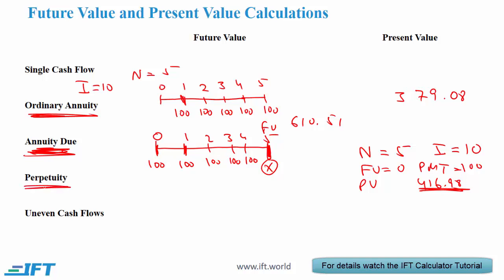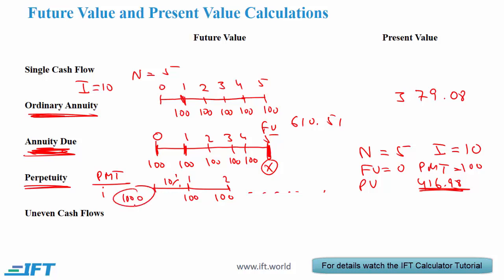With a perpetuity we get a cash flow every year forever. So if we have a situation where we get $100 at the end of year 1 and then $100 at the end of every year forever, this is a perpetuity. The present value of a perpetuity is equal to the cash flow or the payment divided by the interest rate. If the interest rate is 10% then the present value is going to be 100 divided by 0.1, so we have a present value of $1,000. Notice that the present value of a perpetuity is one period before the first cash flow.